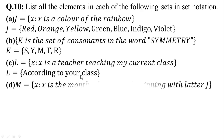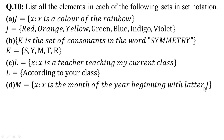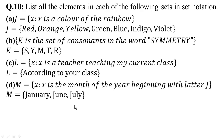In part D, {x : x is a month of the year beginning with the letter J}. We write the month names whose beginning letter is J in set notation. The answer is January, June, and July. These three months start with the letter J. So M = {January, June, July}.